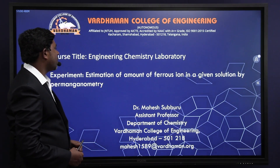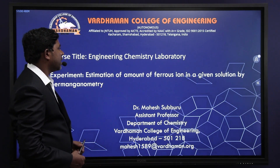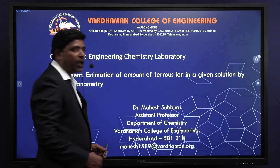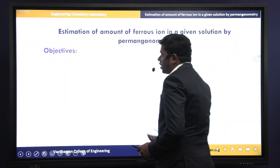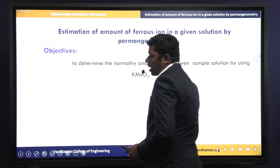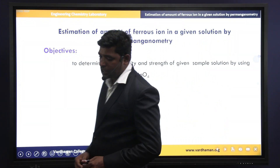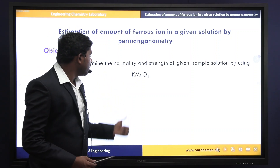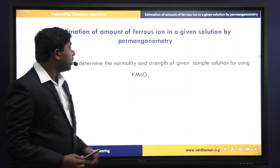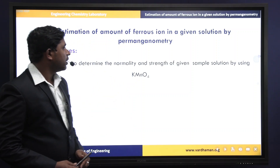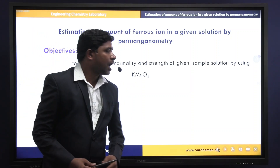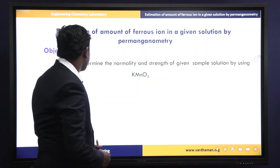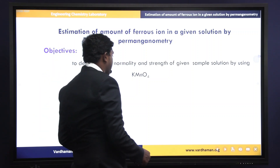That is estimation of amount of ferrous ion in given solution by permanganometry. The objective of this experiment is to determine the normality and strength of given sample solution by using potassium permanganate.